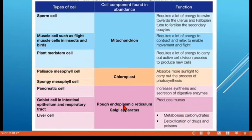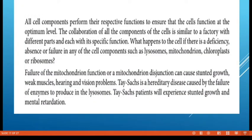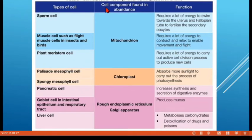Pancreatic cells contain many rough ER (endoplasmic reticulum) and Golgi apparatus because their function involves the synthesis and secretion of digestive enzymes. Goblet cells in the intestinal epithelium and respiratory tract also contain many of these organelles because their function is to produce mucus. Liver cells contain many of these organelles because their functions include metabolizing carbohydrates and detoxifying drugs and poison.